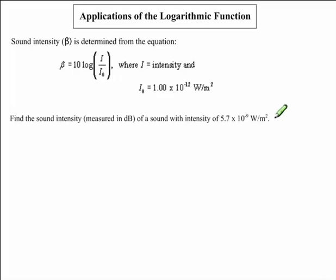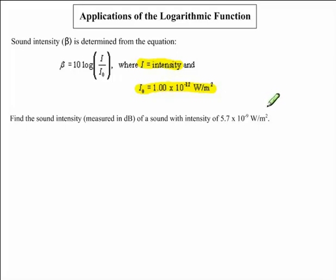Before we begin answering this question, let's highlight some of the key points given to us. We are first told that i represents the intensity. Next, i0 is equal to 1.00 times 10 to the exponent negative 12. Lastly, we have a sound that has an intensity of 5.7 times 10 to the exponent negative 9.